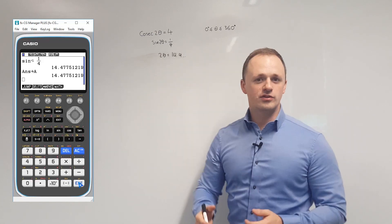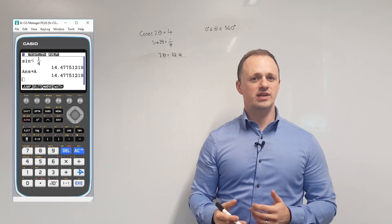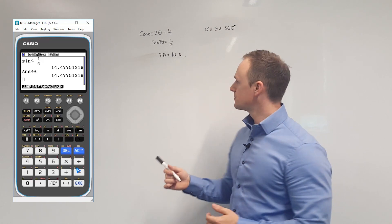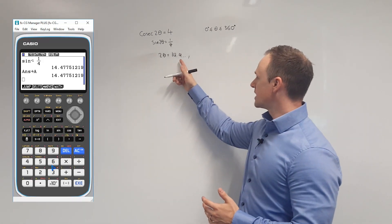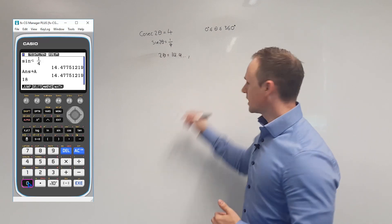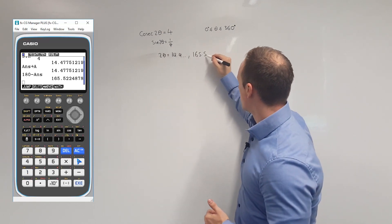Now, that's not the exact value, so we should be storing that value in our calculator at the moment so that we can use it later. To get a second solution, we can use the symmetry property and do 180 minus the first solution, and that gives us 165.5.